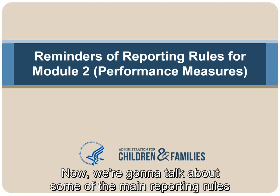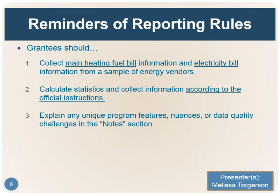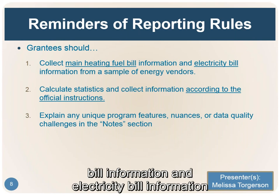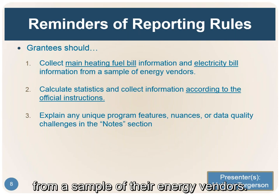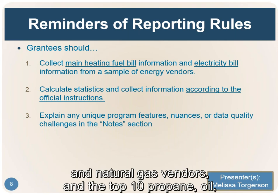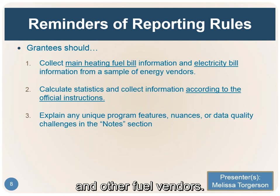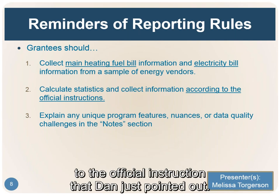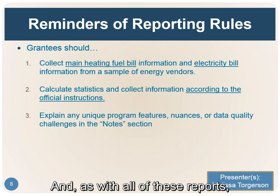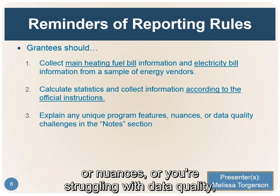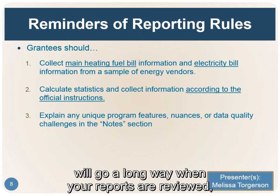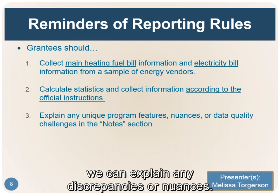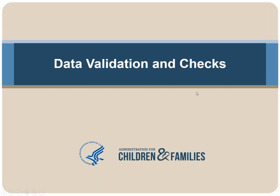Now we're going to talk about some of the main reporting rules for Module 2. Grantees should be collecting main heating fuel bill information and electricity bill information from a sample of their energy vendors — specifically, the top five electric and natural gas vendors and the top 10 propane, oil, and other fuel vendors. We expect that you'll be calculating all of your statistics according to the official instructions. Any time there are unique program features, nuances, or data quality issues, taking time to explain that in the notes section will go a long way when your reports are reviewed.